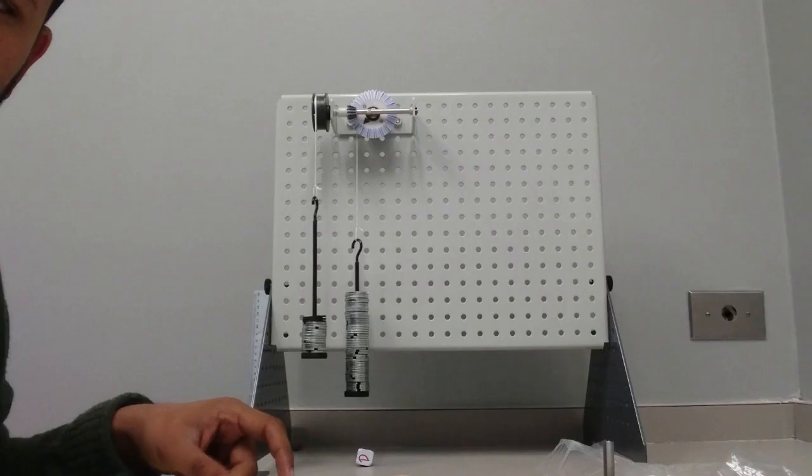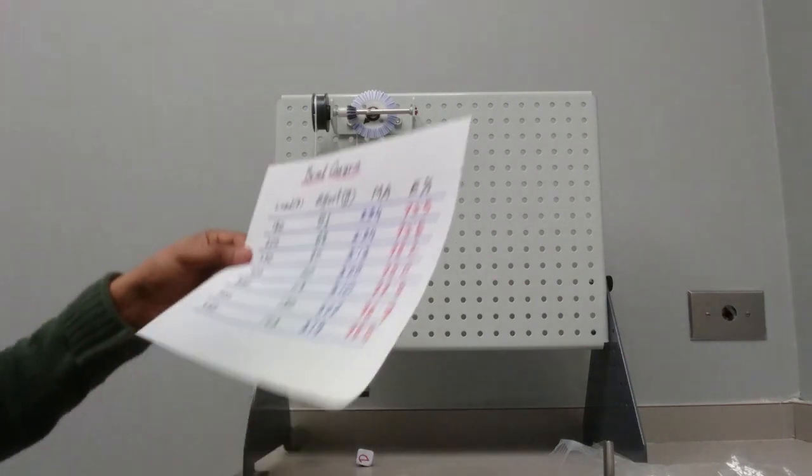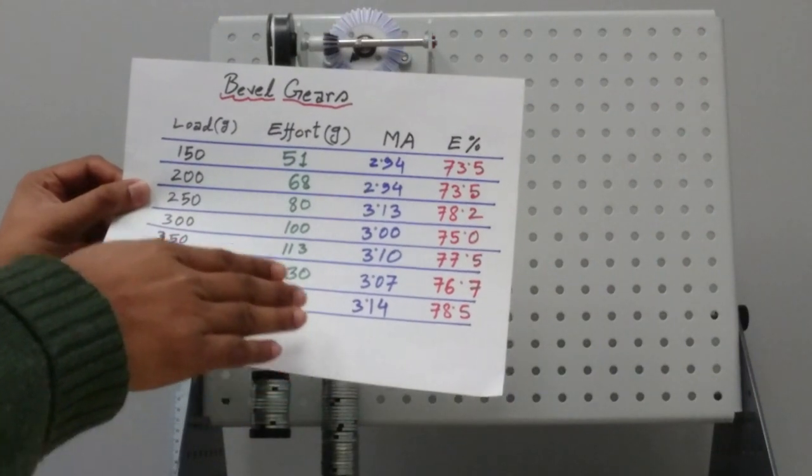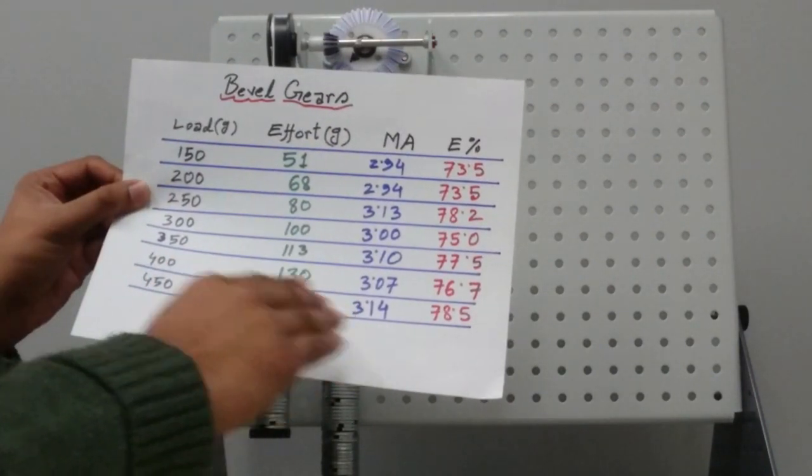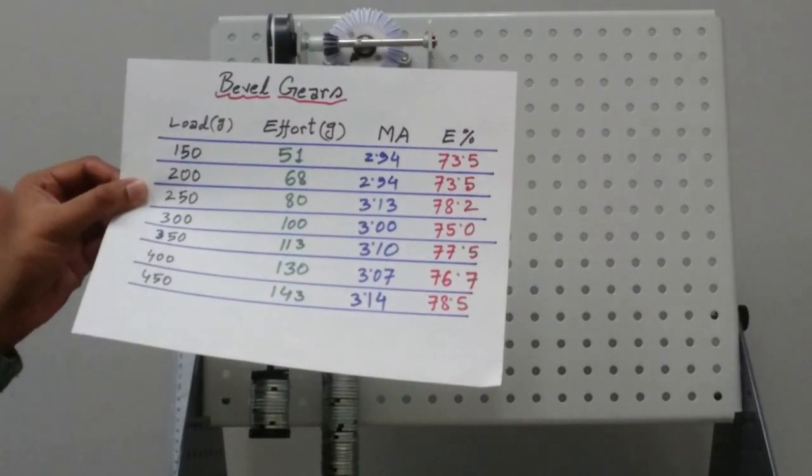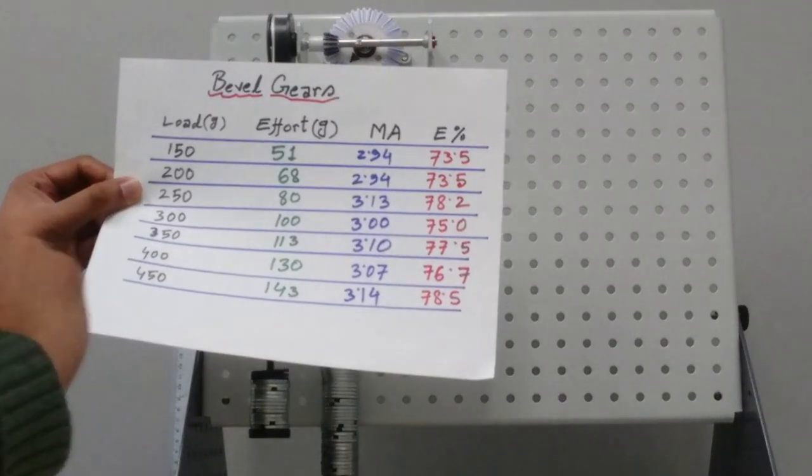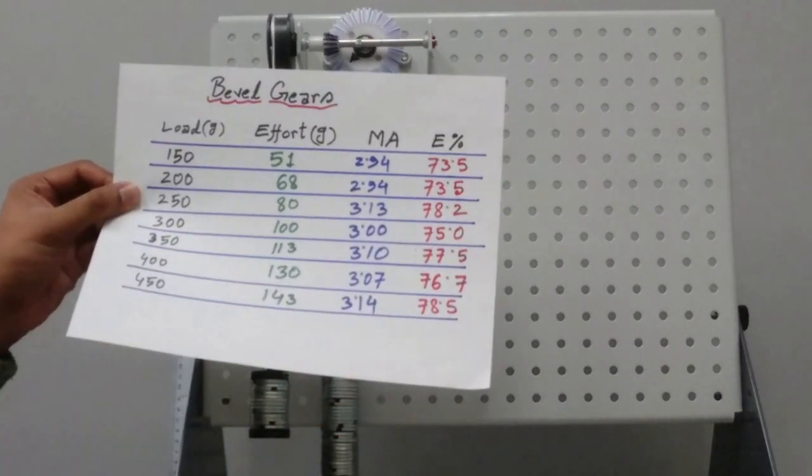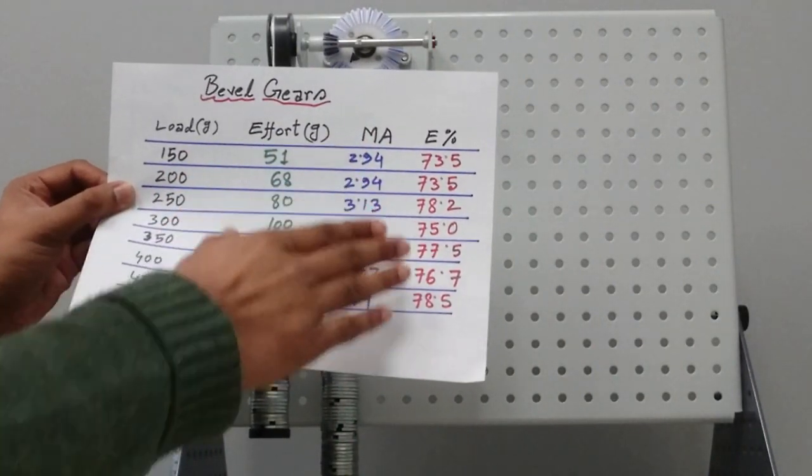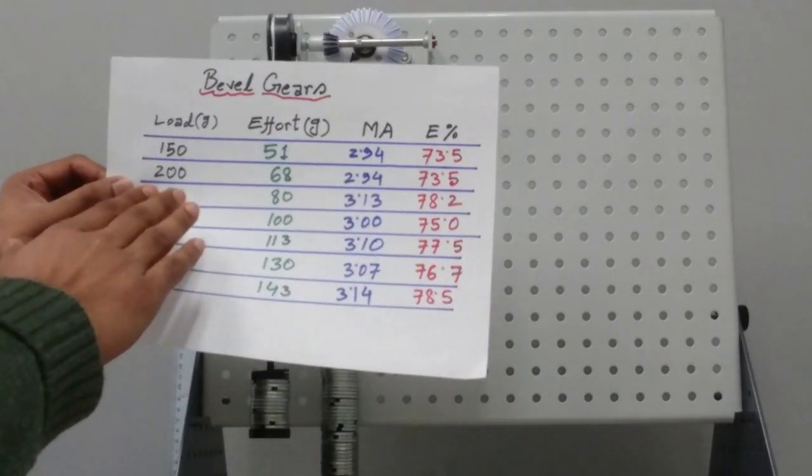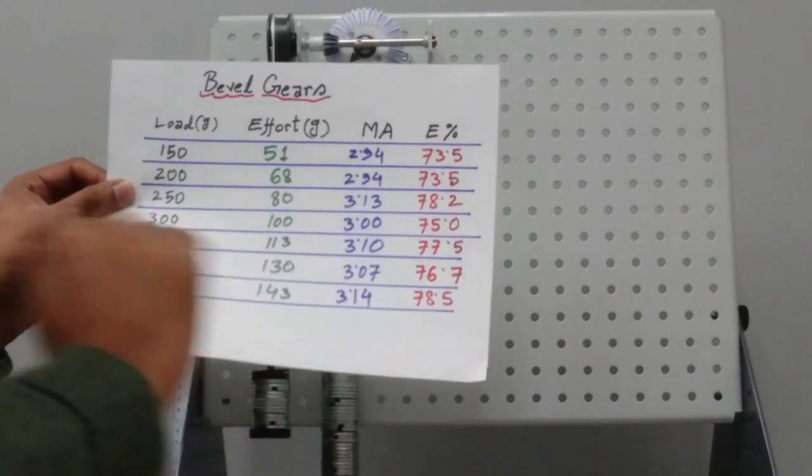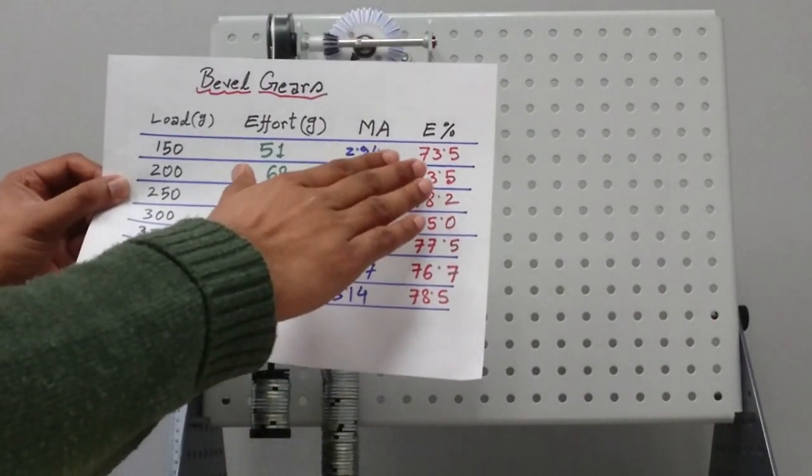So we have finished our calculation, and this is what the results look like. If we see our mechanical advantage, it varies between 2.94 to 3.14. For higher loads, these are more stable. Efficiency ranges from 73.5 percent to 78 percent. Efficiency and mechanical advantage, you see, they are more stable for higher loads. Starting from 250, they are kind of the same, you see here and here, 78. And at lower load, it was kind of low.